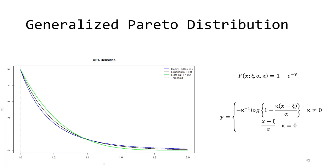The generalized Pareto distribution's first parameter is the threshold used to compute the excesses. It also has a scale parameter and a shape parameter, making it a three-parameter distribution. The shape parameter controls the tail weight of the distribution. Much like the generalized extreme value distribution, negative values of the shape parameter have a heavy tail, a shape parameter equal to zero has exponential tails, and a positive shape parameter has a light tail. Notice that all three shapes for the distribution are very similar, mainly varying in their asymptotic approach to the right and their fixed lower support at the threshold value.